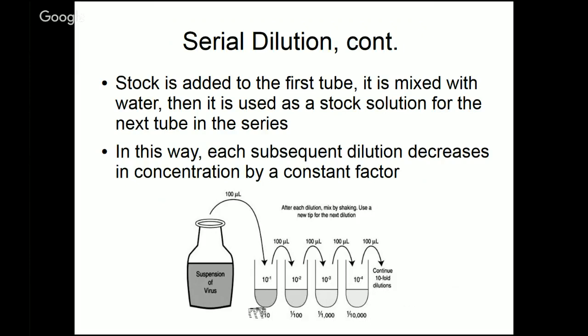In this example, this viral suspension has been diluted and each time it's been diluted, it's diluted by a factor of 10. So this first tube is 1 tenth as concentrated as the stock. The second tube is 1 hundredth as concentrated as the stock. It's 1 tenth as concentrated as the first tube. And so on and so on all the way down.